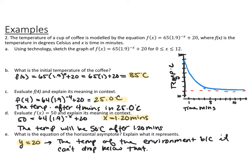For part B, the initial temperature of the coffee: plug in 0 for x. 1.9 to the 0 power is 1, times 65 plus 20 equals 85 degrees Celsius. For part C, evaluate f of 4: plugging in 4, you end up with 25.0 degrees Celsius. That means the temperature of the coffee after 4 minutes is 25.0 degrees Celsius.